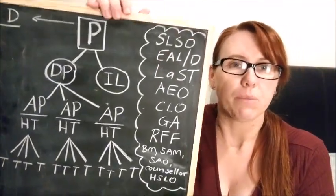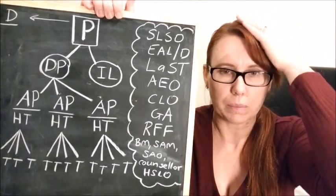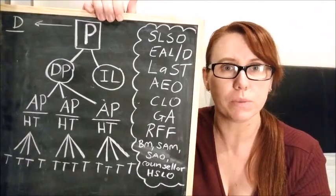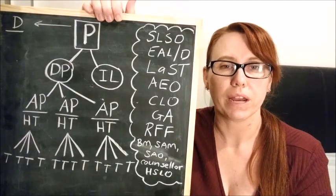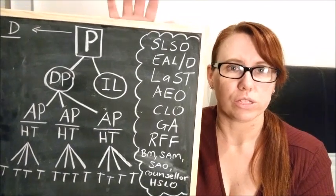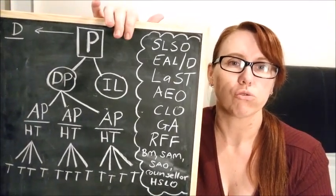The AEO, an Aboriginal Education Officer. Not all schools have one. Depends on what school you're in, what your location is, what your Aboriginal enrolments are, the connection that you might have to the AECG as well. But they are there to support Aboriginal students and the Aboriginal learning that goes on in your school.